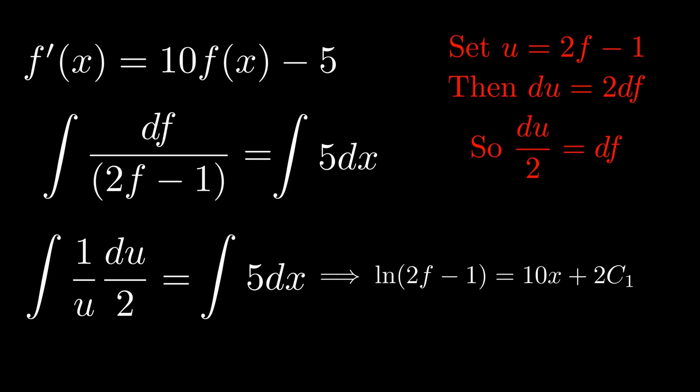Now the ultimate goal of this problem is to solve for f. We want to find f that satisfies the ordinary differential equation in the left hand corner of the screen. So we need to get rid of the natural logarithm first, which we can do using the following identity: e raised to the natural logarithm of x is equal to x. So upon raising everything to the exponential function we get 2f minus 1 is equal to e raised to 10x plus 2c1, which is equal to e raised to 10x multiplied by e raised to 2c1.